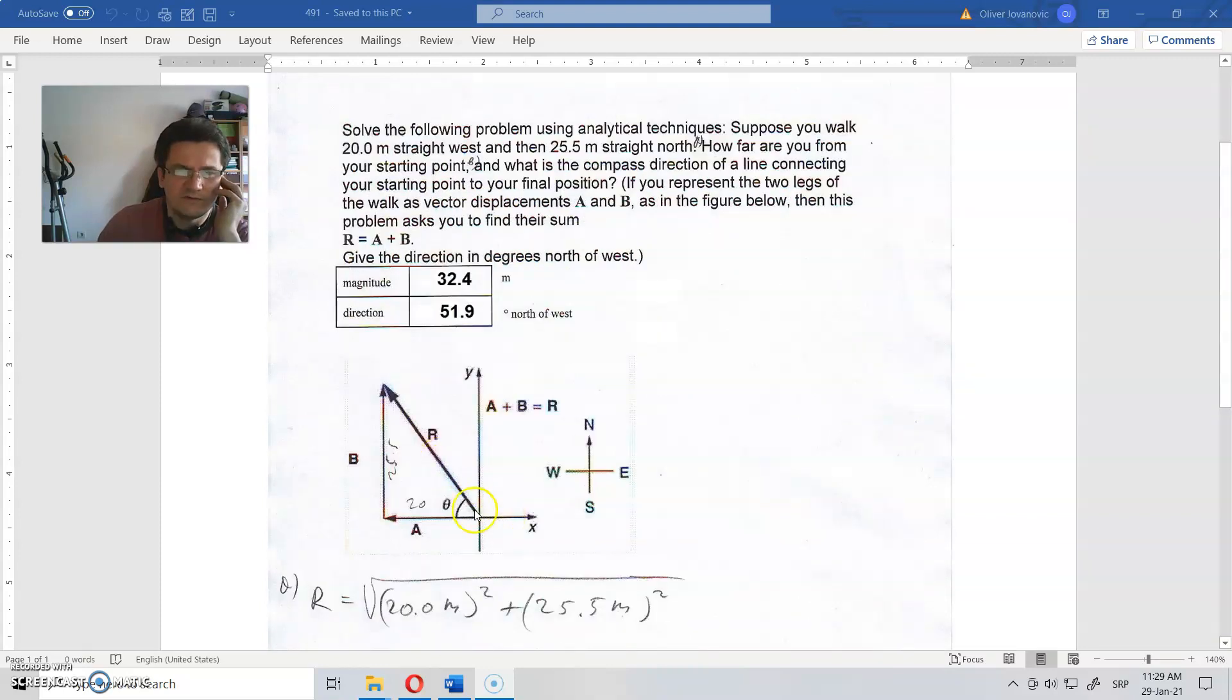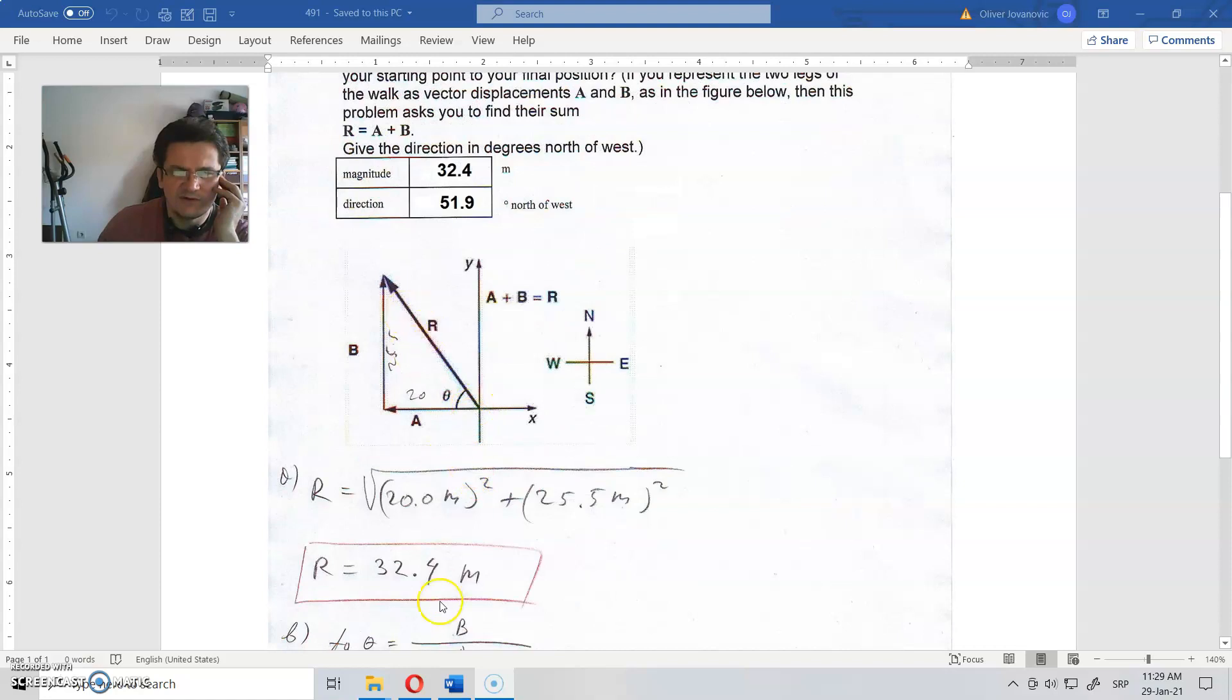First of all, magnitude of that is calculated like this. A squared plus B squared and square root of that is R squared. That is more or less Pythagoras' theorem. And that displacement from here to here is 32.4 meters.